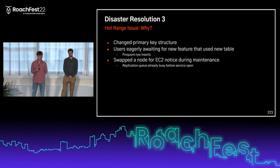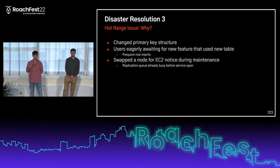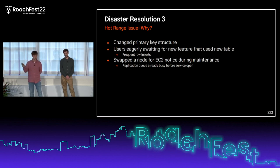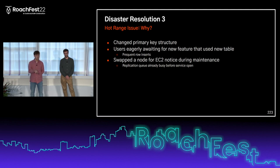There were also users who were impatient about a new feature and rushed in when the game updated. That new feature used a new table that wasn't pre-split, with frequent raw inserts leading to a newly created range becoming a hot range. We also had to swap a node for an EC2 retirement notice during maintenance for the update, which added to the replication queue. So the cluster was already busy before the service opened, and then the hot range issue compounded everything.